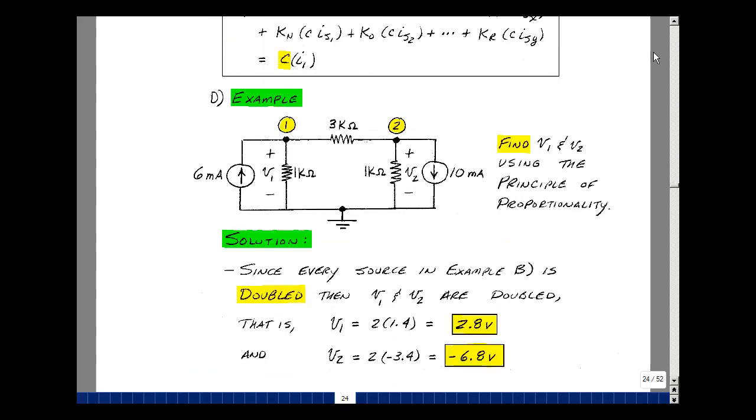Let's do an example. Let's take this example we've done several times, where we had two current sources. They were 3 milliamps and 5 milliamps. And suppose that I double them. Let's find the node voltages V1 and V2 now with this circuit, using the principle of proportionality.